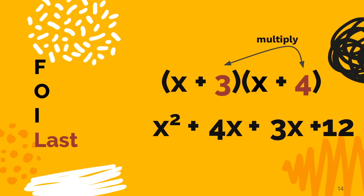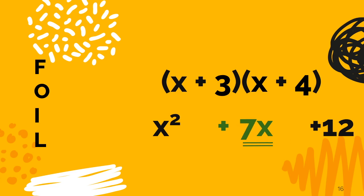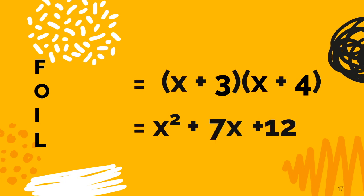And look here in the middle, we have like terms that can be combined. 4x combined with 3x, both positive, makes positive 7x. And we call that the middle term. So our final answer is x squared plus 7x plus 12.